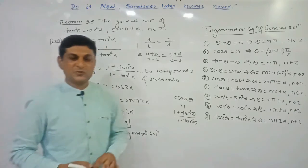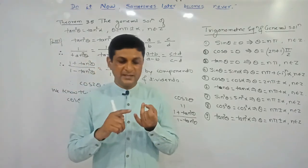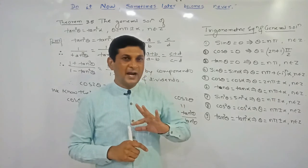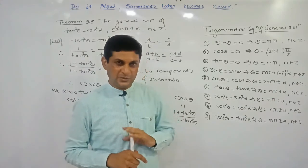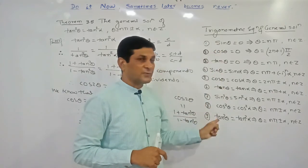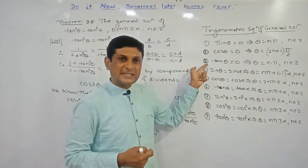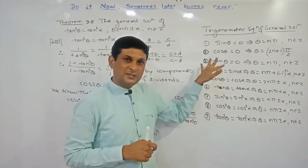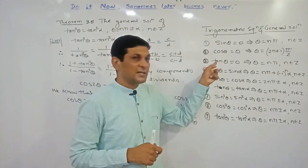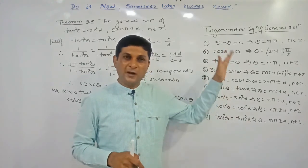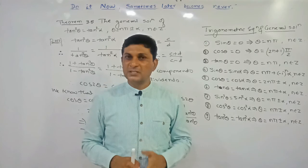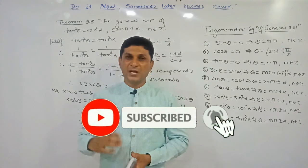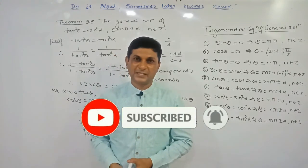In this way we have proved all six theorems from the first article on trigonometric equations. In total, there are nine important formulas to find the general solution: the first three are given as remarks, and theorems 3.1 through 3.6 are the remaining six. We will apply these formulas to solve examples from the first exercise in the next video.